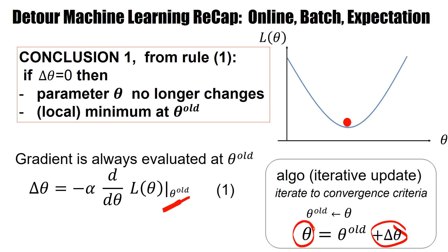If the change delta theta is zero, then the parameter no longer changes. Since delta theta is defined as the gradient of the loss function, that means we are at a local minimum — the gradient is flat — and we have found the local minimum of the loss function.